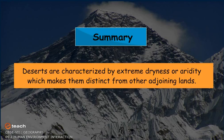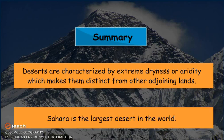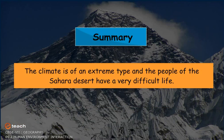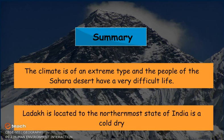Summary: Deserts are characterized by extreme dryness or aridity, which makes them distinct from other adjoining lands. The Sahara is the largest desert in the world. Its climate is of an extreme type, and the people of the Sahara desert have a very difficult life. Ladakh is located in the northernmost state of India and is a cold, dry desert.